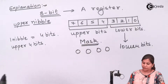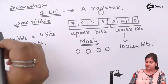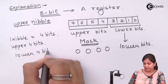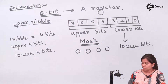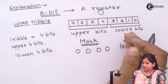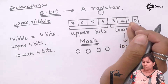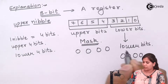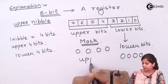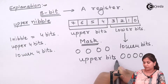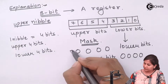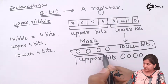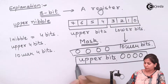For comparison, if we wanted to mask the lower nibble, bit numbers 3, 2, 1, 0 would become 0000 and the upper bits would remain as they are. So when masking the upper nibble the lower 4 bits are preserved, and when masking the lower nibble the upper 4 bits are preserved.